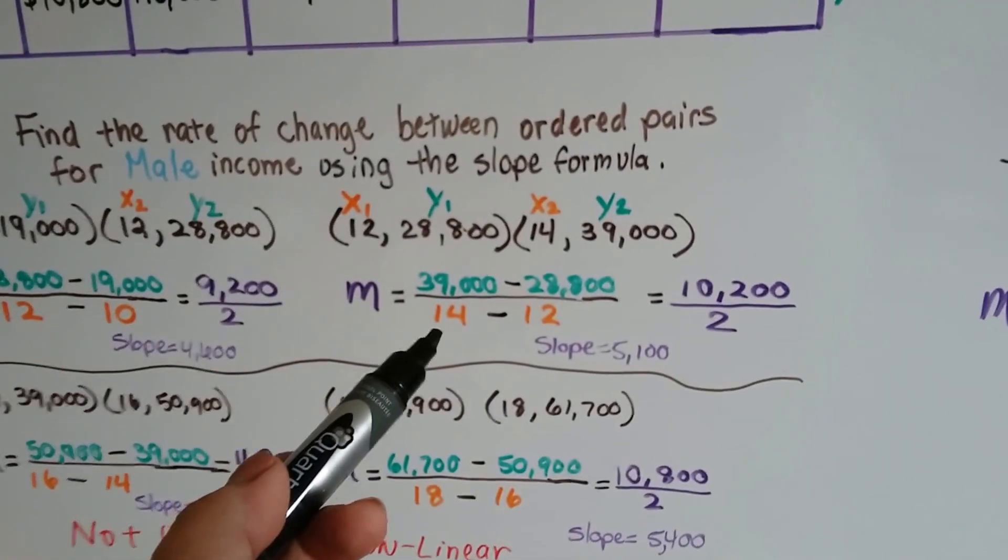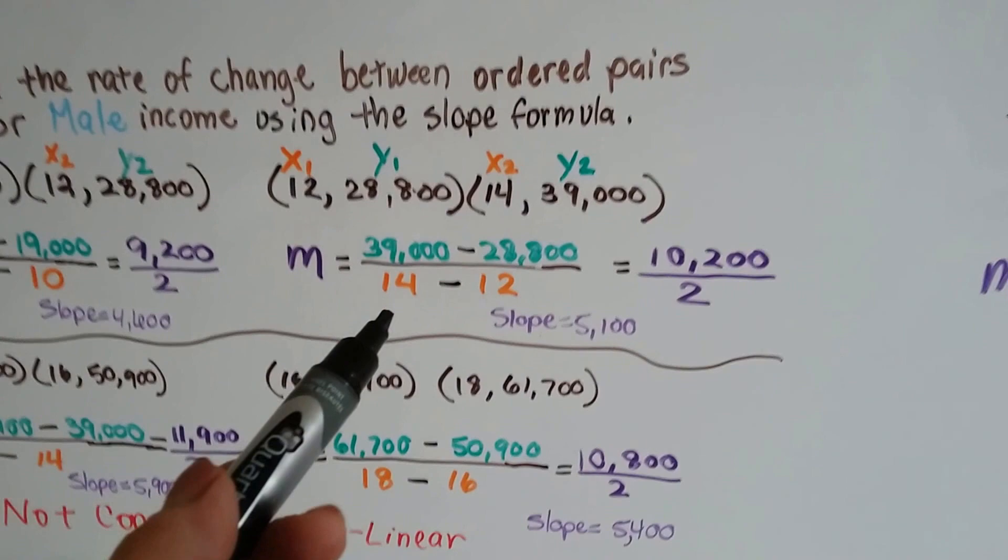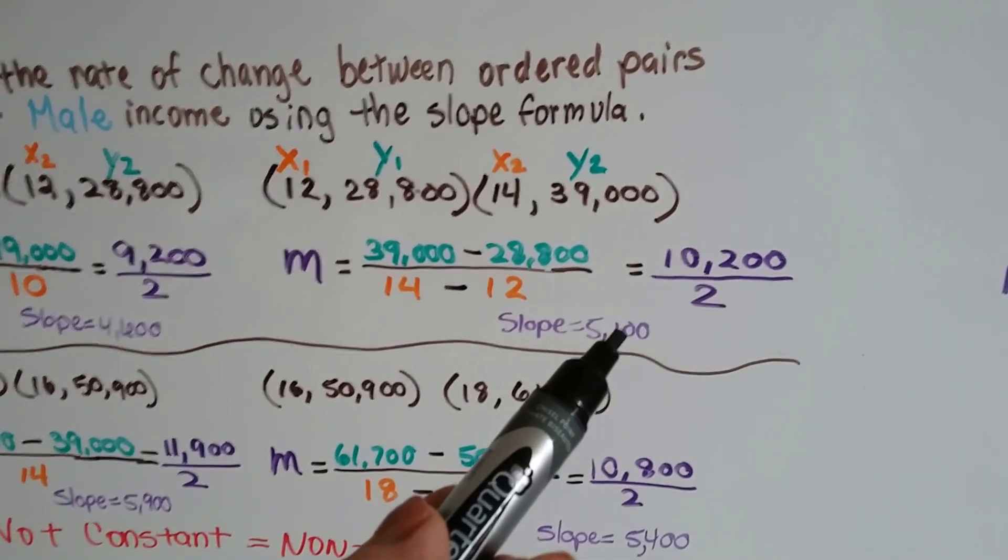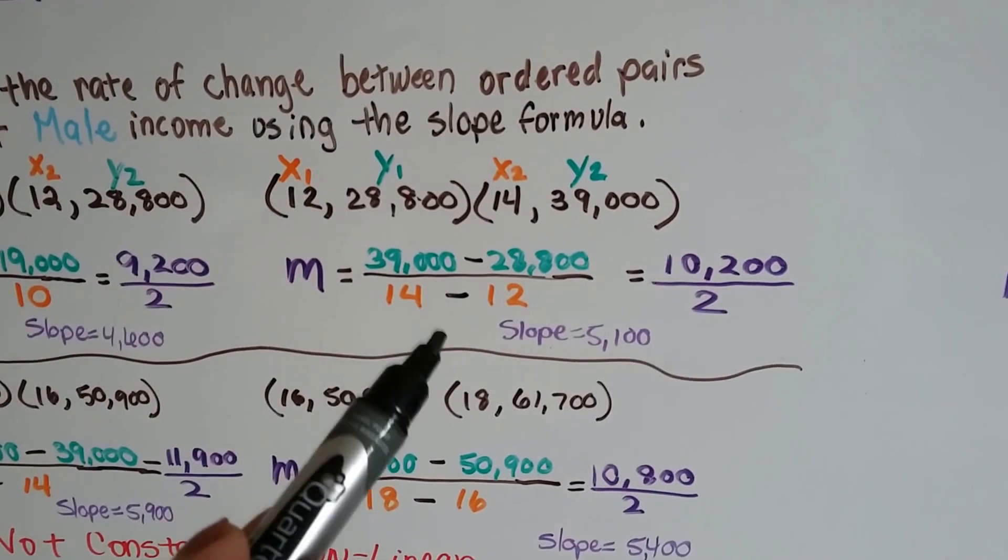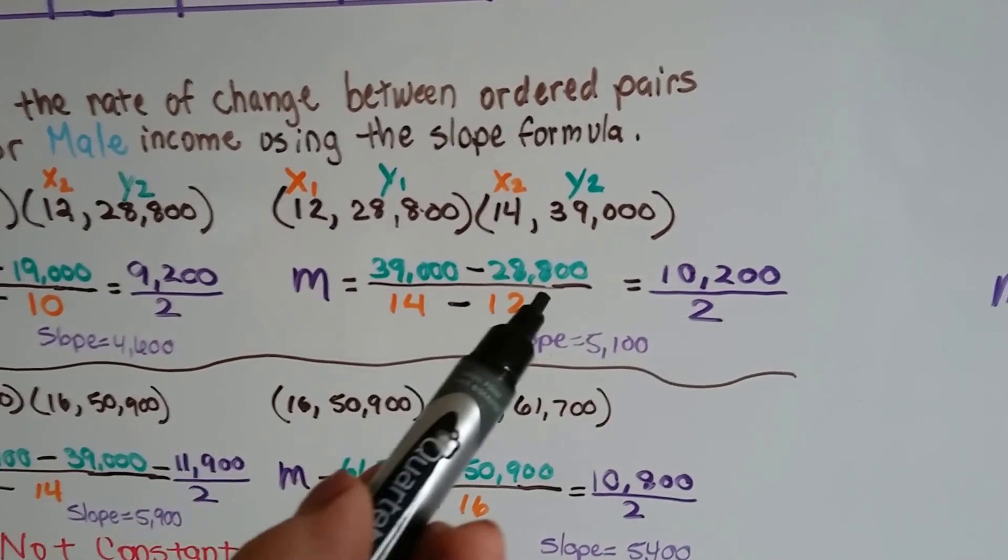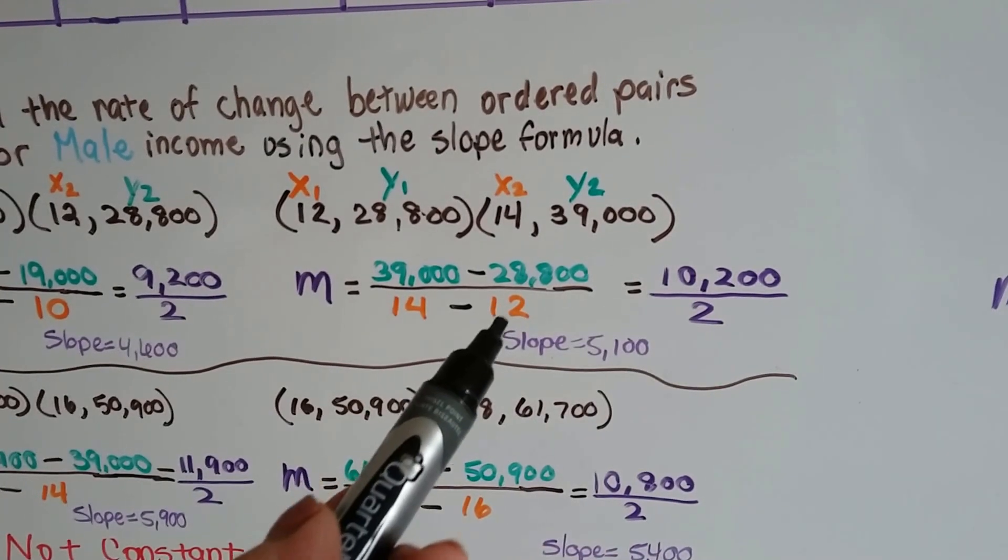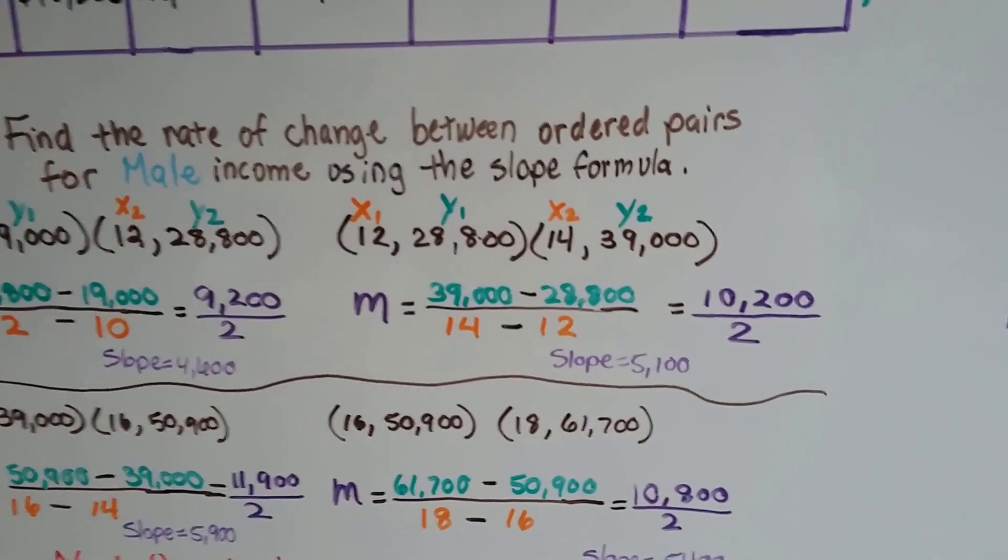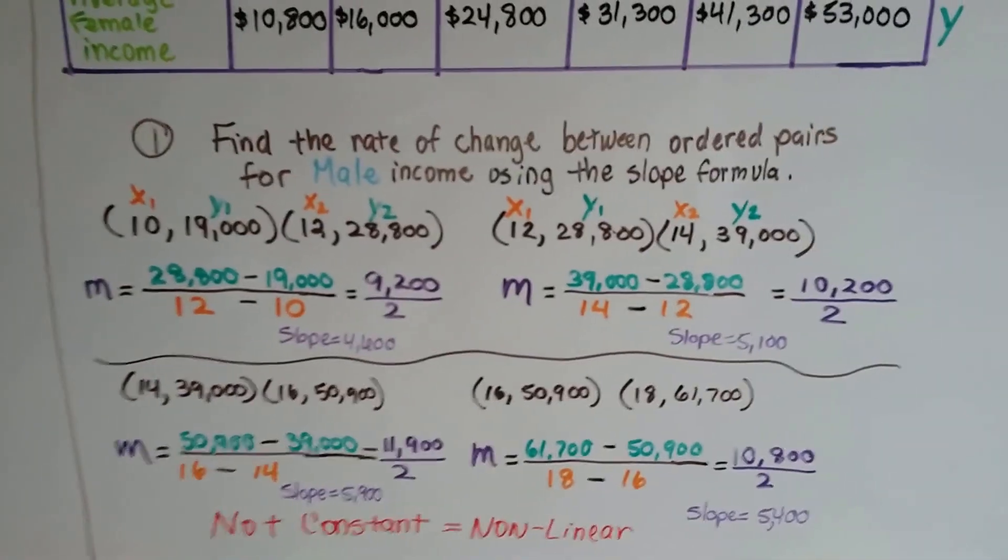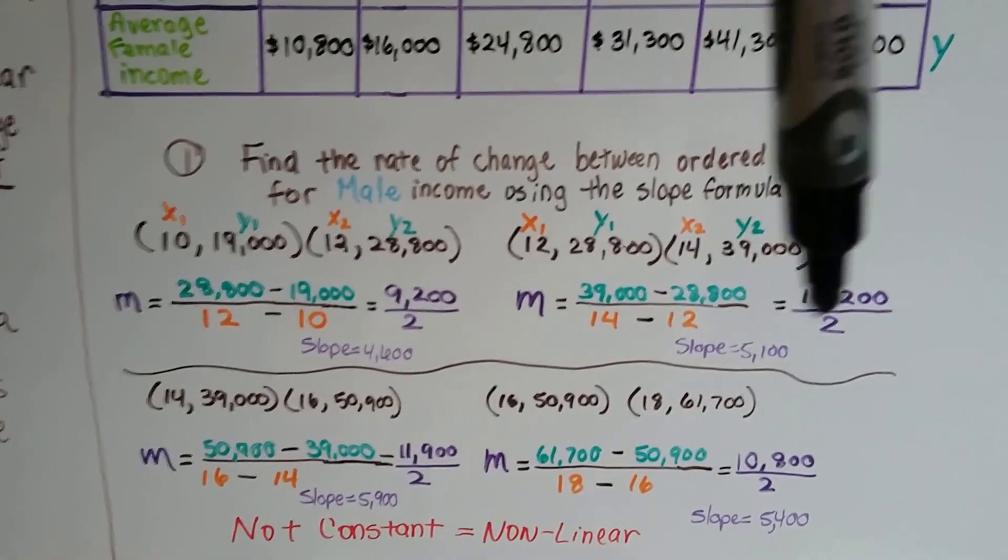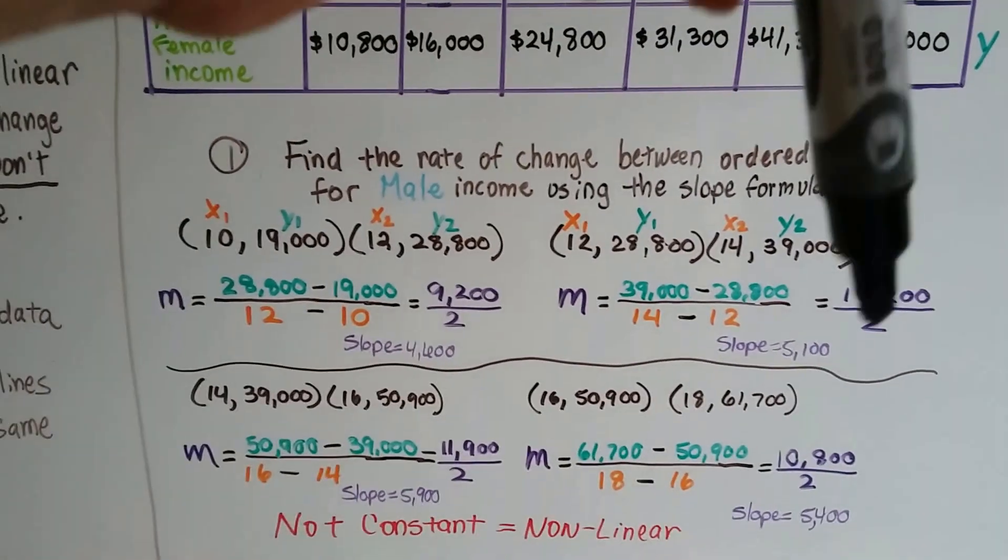To compare a high school graduate to someone with an associate's degree for men, they're going to average $5,100 a year for every year more that they're in school. Between the two degrees, between a high school diploma and an associate's, they're going to make $10,200 just for that degree in difference. But it's $5,100 each year because there's two years here. We need to simplify this.